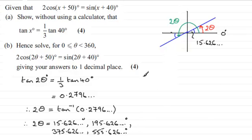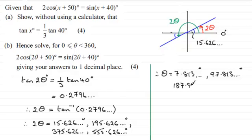So that when I now divide by 2 to get theta, we now see that therefore theta equals, dividing the first one gives us 7.813 and so on degrees. For the next one, we get 97.813 and so on degrees. Dividing 375 odd by 2 gives us 187.813 and so on degrees. And finally dividing the 555 by 2 gives us 277.813 and so on degrees.